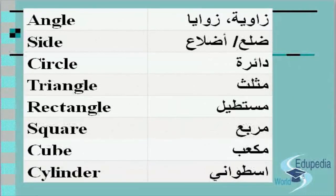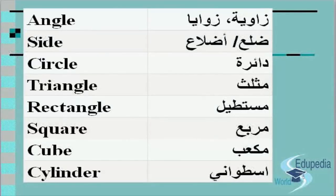More words. To say angle — singular: زاوية, dual: زاويتان, plural: زوايا. Side — singular: ضلع, dual: ضلعان, plural: أضلاع.